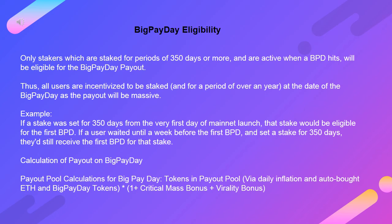Example: if a stake was set for 350 days from the very first day of mainnet launch, that stake would be eligible for the first BPD. If a user waited until a week before the first BPD and set a stake for 350 days, they'd still receive the first BPD for that stake. The payout pool calculation for Big Payday = tokens in payout pool via daily inflation and auto-bought ETH and Big Payday tokens × (1 + critical mass bonus + virality bonus).